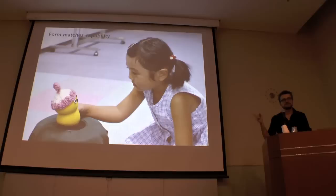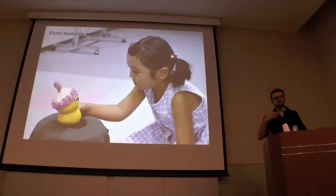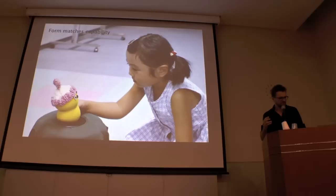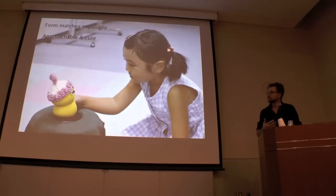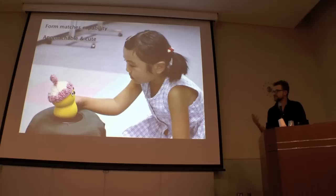First is that the form matches the capability. Kipon is able to express some very simple emotions. If we put some simple computer vision and responsive behaviors onto it, they are very simple. And the appearance of this robot matches that limited capability. The design of the robot is very approachable, small, soft, and cute. So, of course, children are going to be comfortable with it.